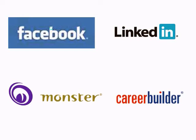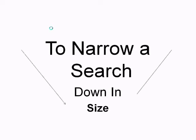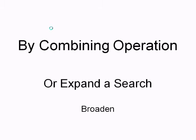It works in two separate ways: to either narrow down a search by being more specific and more precise, which makes it much smaller, or to do the opposite by broadening or expanding a search — a way of combining operations so it will make it more broad.